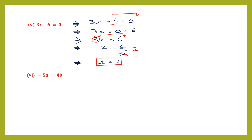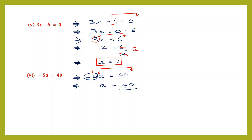Question 6: −5a = 40. We keep only a on the left and transpose −5 to the right-hand side. Since −5 is multiplication, it becomes division on the right: a = 40 ÷ (−5). The sign here is understood to be plus, and plus × minus is minus. Since 5 eights are 40, we get a = −8.